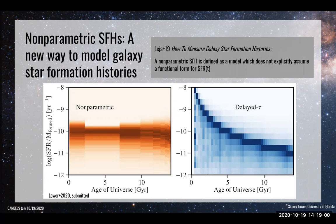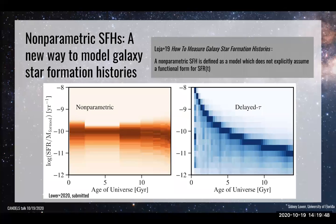One could argue that the non-parametric model isn't a fair game to play against the parametric because of the sheer intrinsic flexibility. But if you restrict yourself to the same number of parameters as in the parametric model, the stellar masses you get are still much better. Kartik's Gaussian process star formation history model actually determines the optimal number of parameters to describe the star formation history from the data — so it's probably more purely non-parametric.